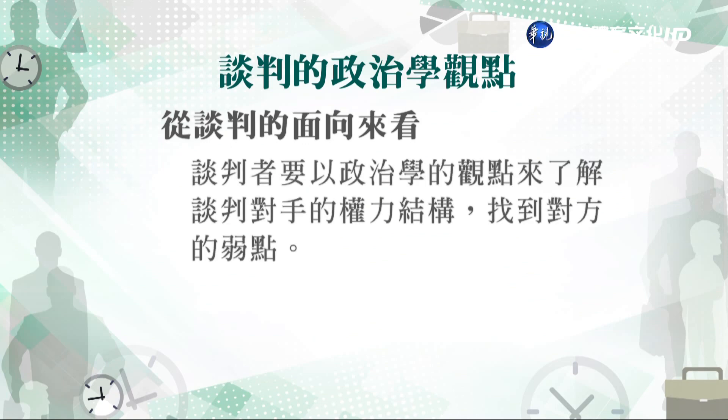看完政治學的簡單定義之後，從談判的面向來看，談判者要以政治學的觀點來了解談判對手的權力結構，找到對方的弱點。首先要了解談判對手他的內部權力結構。例如你想去買一個中古屋，談判的對手就是原來的屋主，他可能是一個家庭，有先生有太太。